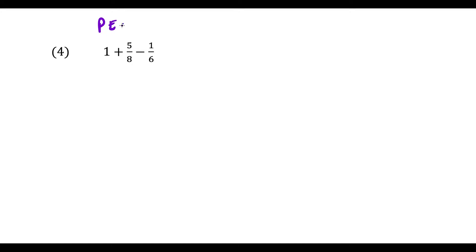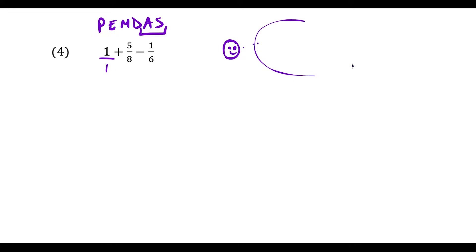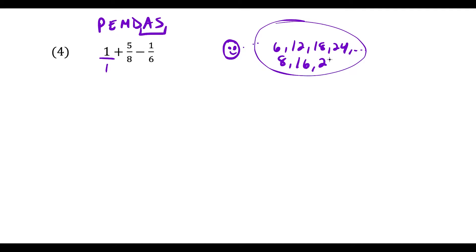For the next one, we're going to use order of operations — PEMDAS. Since the only operations are addition and subtraction, we move from left to right. So first I'm doing 1 plus 5/8, thinking of 1 as 1/1. The thought process is: what is the least common multiple of all the denominators? Counting by 6s: 6, 12, 18, 24... Counting by 8s: 8, 16, 24... 24 is the first place they match up, so 24 is the target.